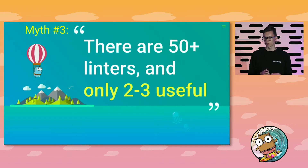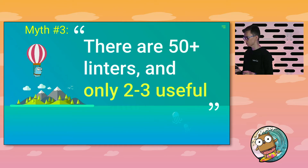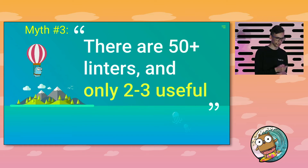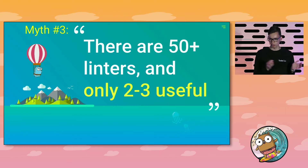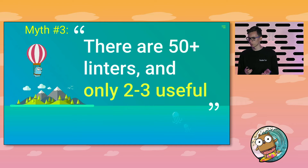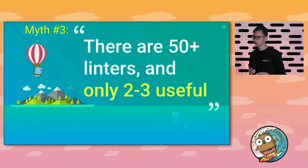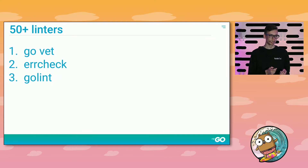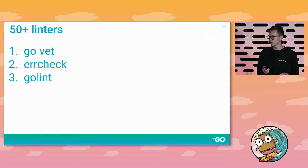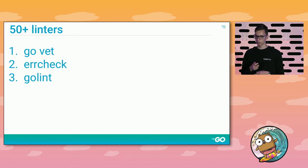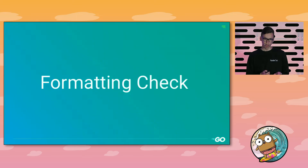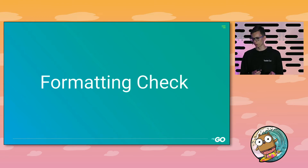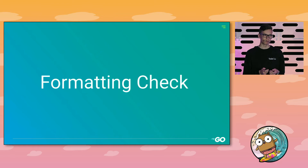The third myth: Go has too many linters. Go is a unique language — I think it's the best for tooling. There are 50 or 100 linters and people say: which ones should I use? A common opinion is to use only two or three, like GoVet, Errcheck, and GoLint — the most popular. But I'd like to introduce 25 linters in 10 minutes to show there are many more useful ones. Let's start from the first group: formatting and checking linters.